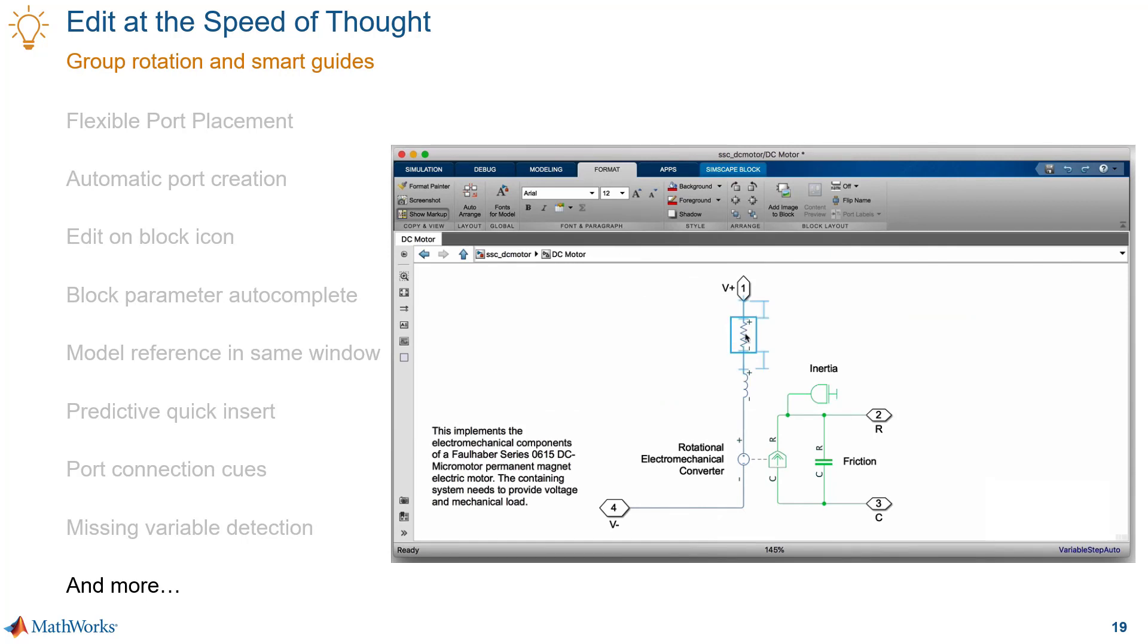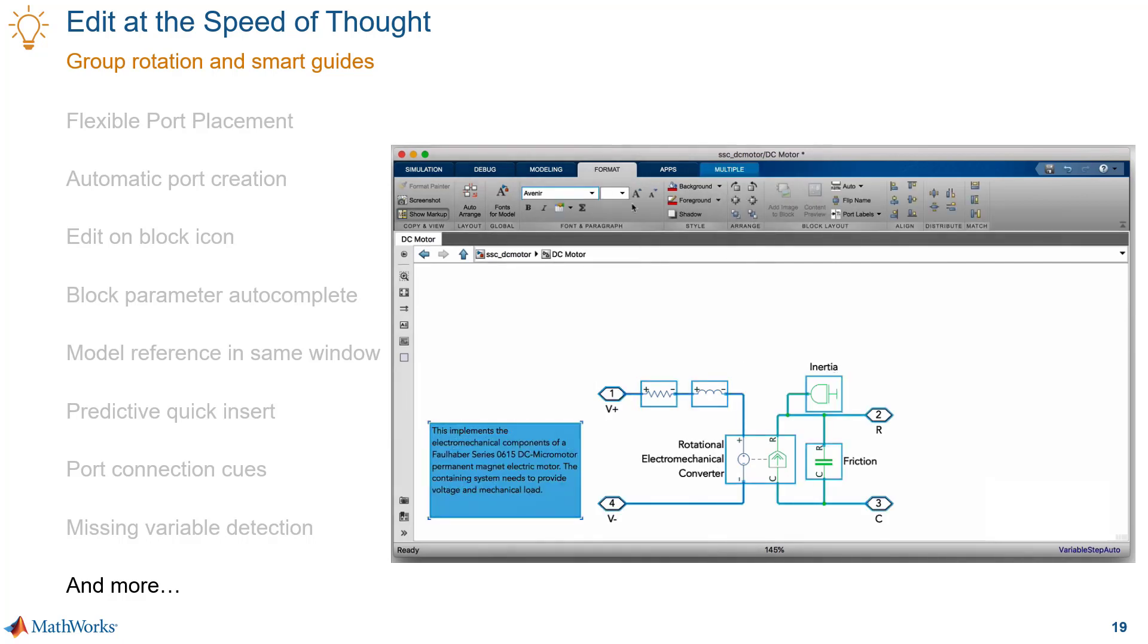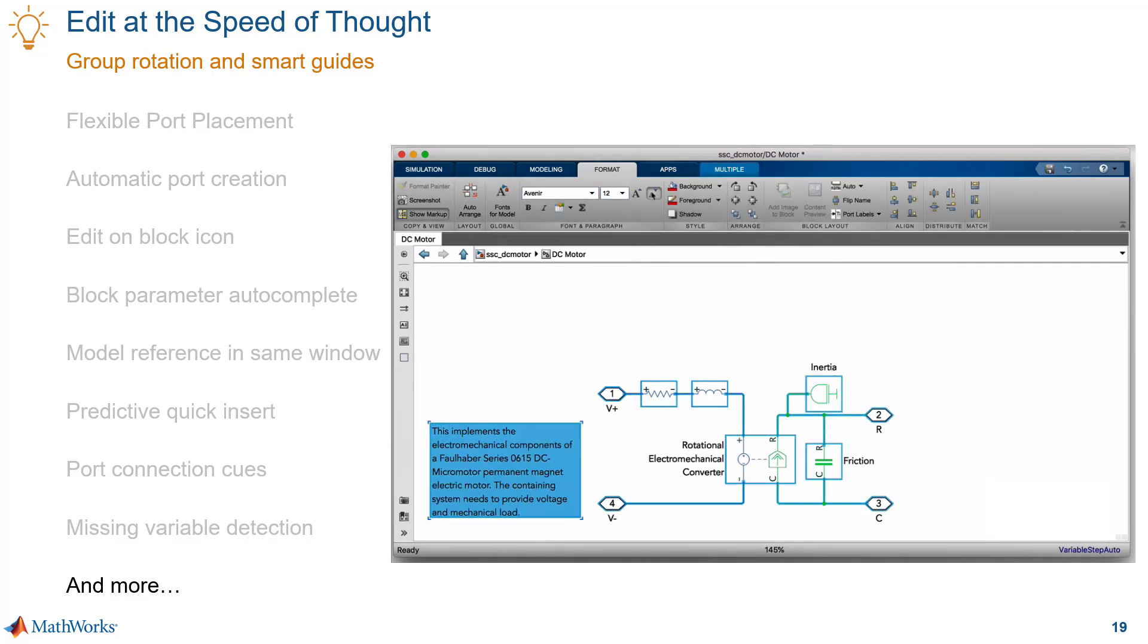There are also enhancements to smart guides for things like equal spacing, resizing, and aligning elements. Group rotation also got a lot better. Again the tool strip exposes a lot of layout and formatting tools that were buried deep in the sub menus before. So it's much easier for you to change the format and style of your models to what you need.